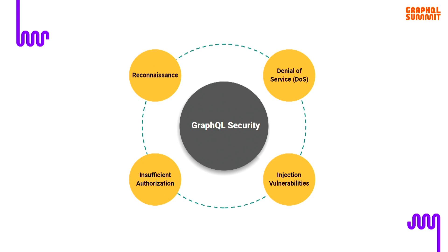Then we go to information leakage, which in GraphQL happens quite often, and it's also linked to insufficient authorization — that's quite a big problem. Very common to find vulnerabilities in this group in GraphQL services. And finally, the last big attack surface is injection vulnerabilities, which are generally the most severe, though GraphQL actually does a good job of protecting from many of these attacks because it implements type checking.